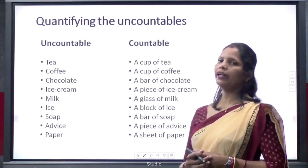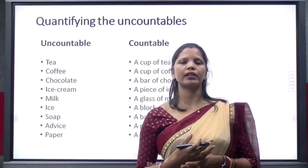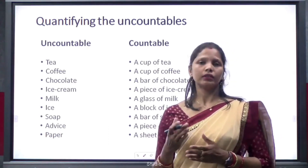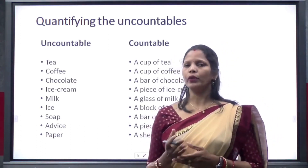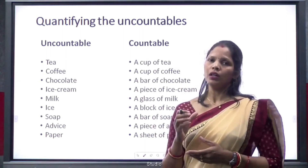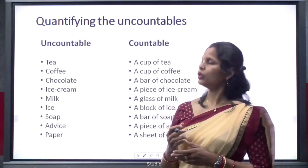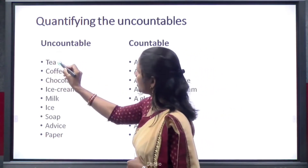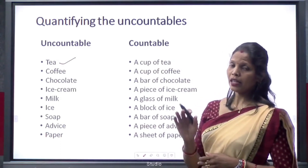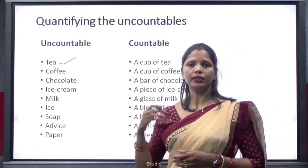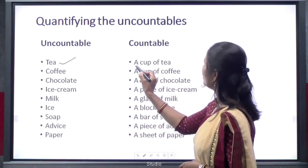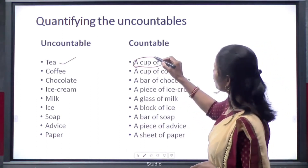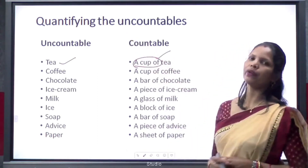Now we will look at quantifying the uncountable. What are quantifying nouns? To make an uncountable noun countable, we have to add some phrases or quantifying nouns. For example, 'tea' is uncountable, and if we want to make it countable, we add 'a cup of' — so 'a cup of tea'. Here 'a cup of' is the quantifying unit.